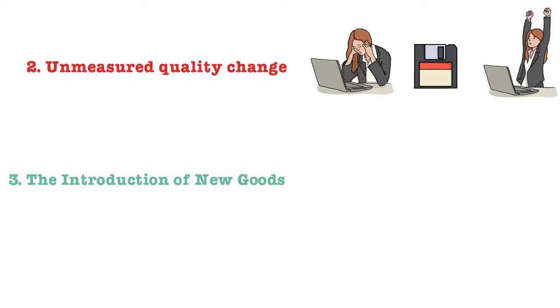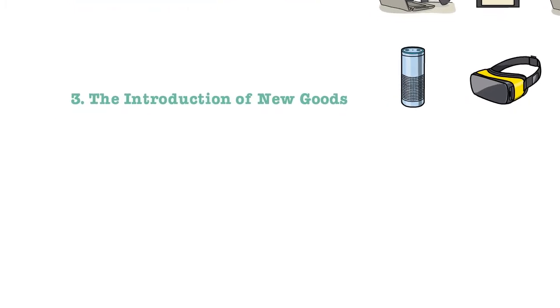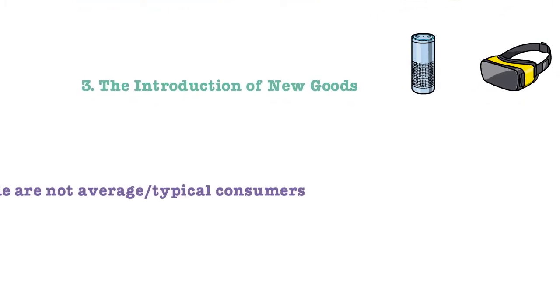Number three, the introduction of new goods are sometimes not captured. As it's a fixed basket of goods, sometimes new goods are slow to come online and be represented. So Amazon's new products, 3D glasses, etc., sometimes they won't be reflected, so price changes in new goods might not come in there for a number of years.